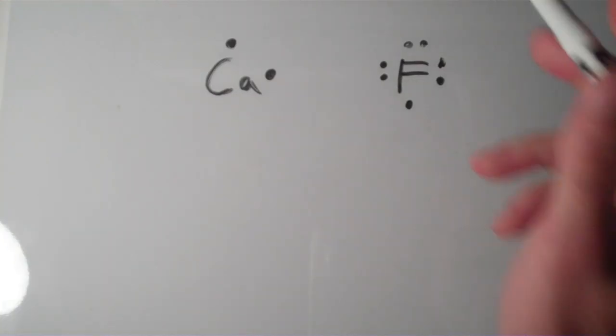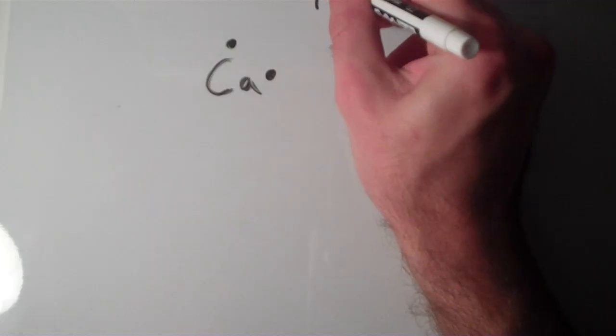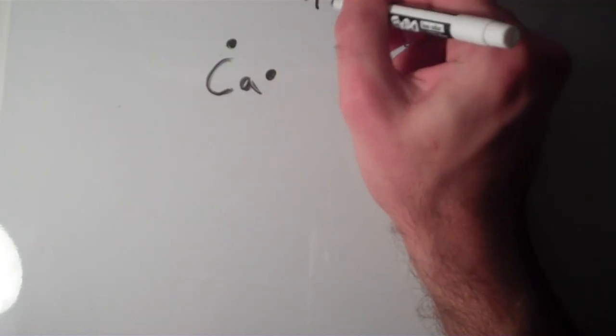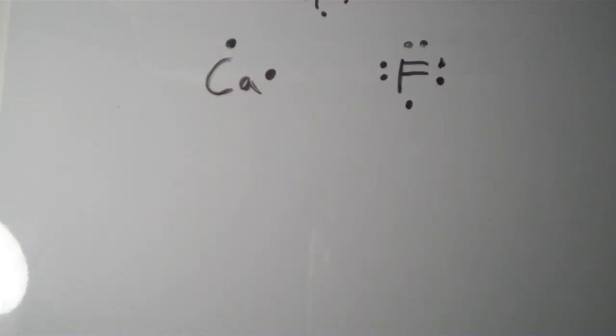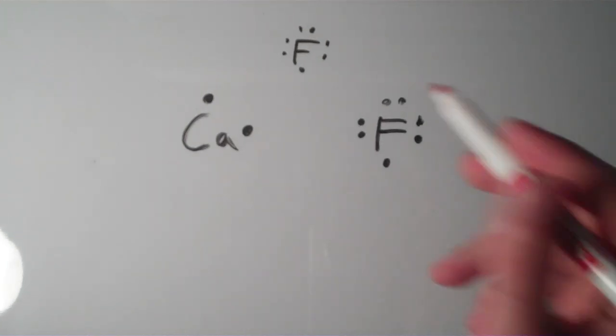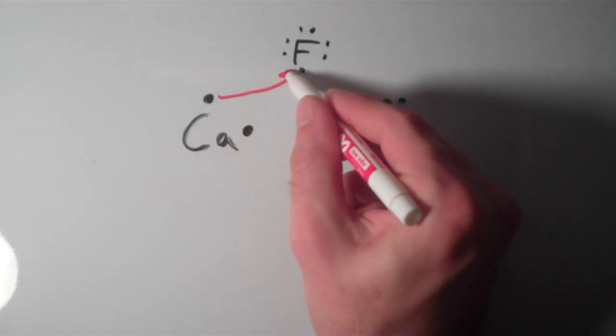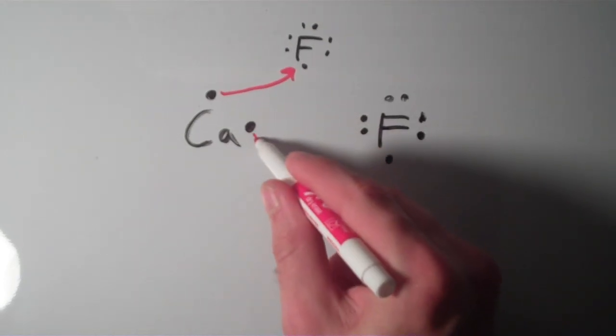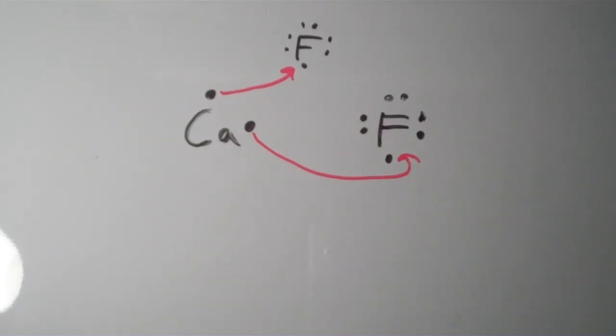So, what if, in other words, I had another fluorine atom, which is possible, and what if I were to get rid of this electron over to this fluorine atom and get rid of this electron over to this fluorine atom?